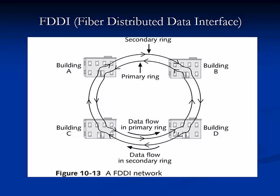Fiber Distributed Data Interface, or FDDI, is a 100 Mbps network access method that runs over double fiber-optic rings. Its primary advantage is its reliability: if one of its rings suffers a fault, data automatically reroutes over the second ring. FDDI was a popular choice for MANs in the late 1980s and early 1990s when it was essentially the only 100 Mbps solution.